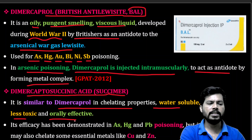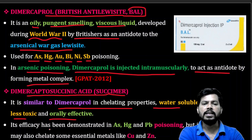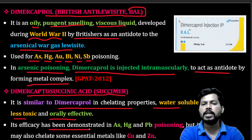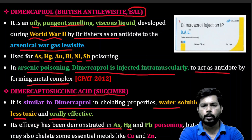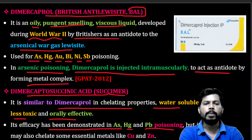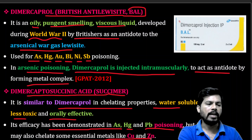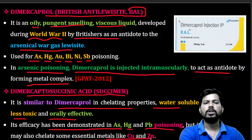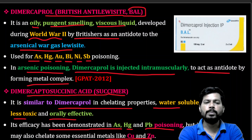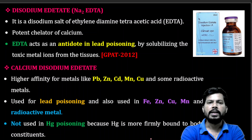Succimer's efficacy has been demonstrated in arsenic, mercury, and lead poisoning. However, it may also chelate some essential metals like copper and zinc. Chemically, it is named dimercaprol succinic acid.